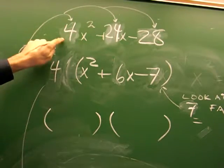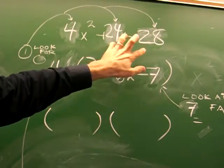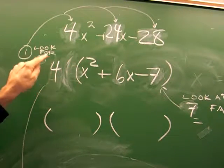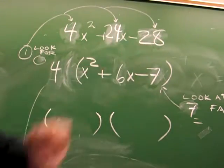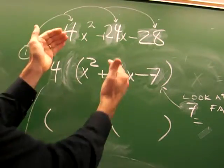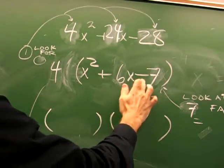but we also notice the 28 and 24, so it's really like saying 4 times 6 is this, 4 times 7 is this. So when you take the 4 out, it's really x squared plus 6x minus 7.